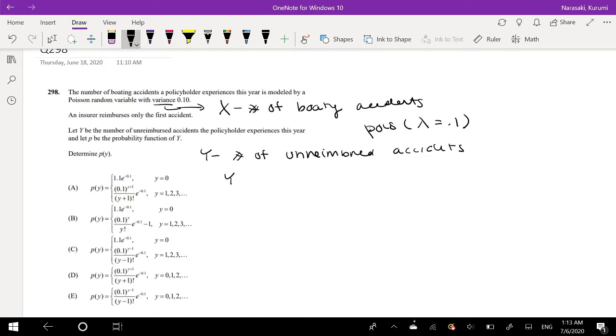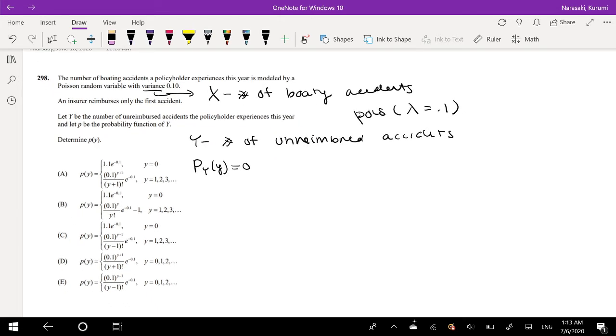So the first thing I'm going to do is find out when can y be equal to 0. Probability of y equals 0. Well that can happen when x is equal to 0 or when x is equal to 1, because when x is equal to 0, when there's zero boating accidents, obviously the number of unreimbursed accidents is zero.